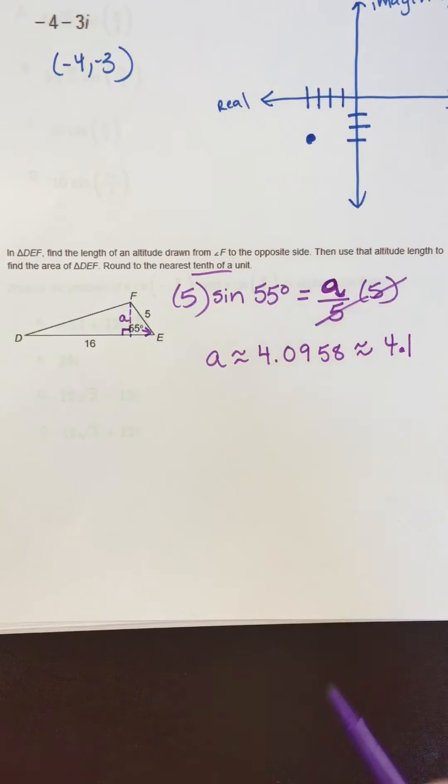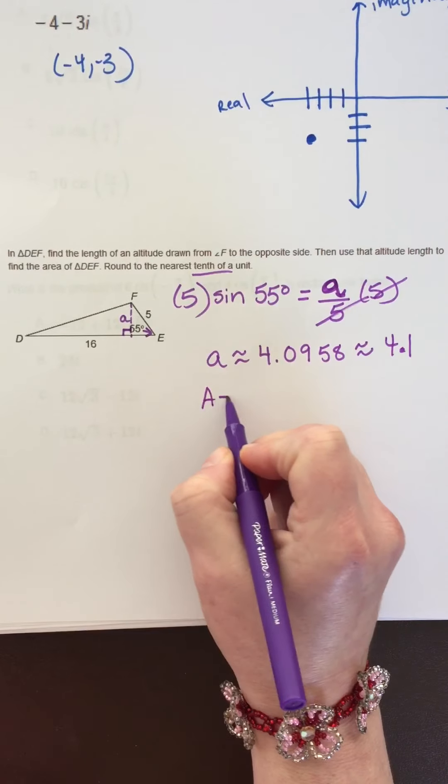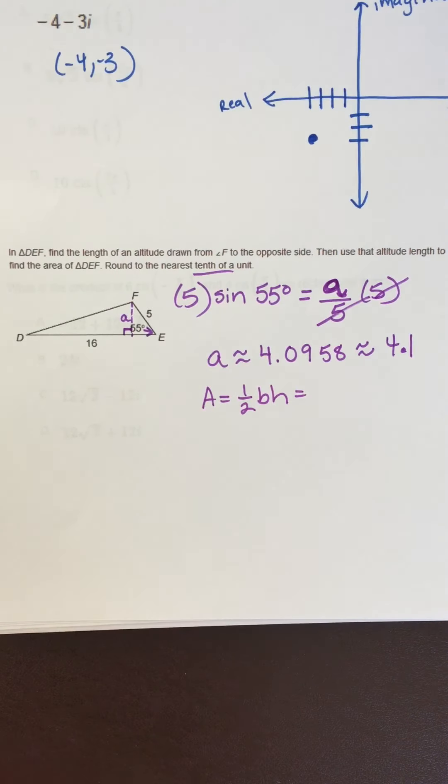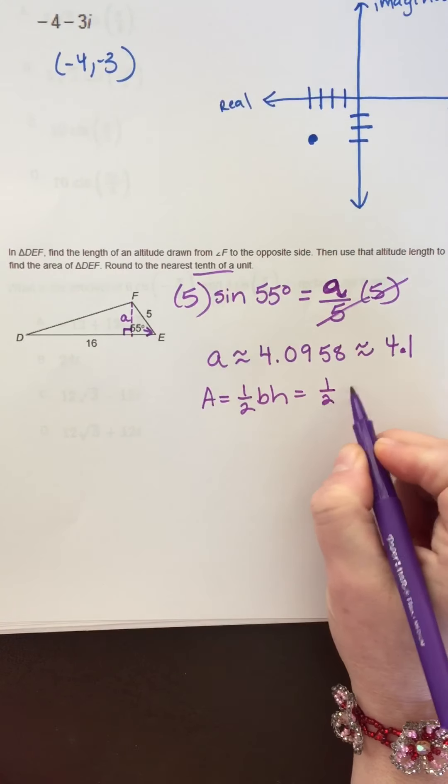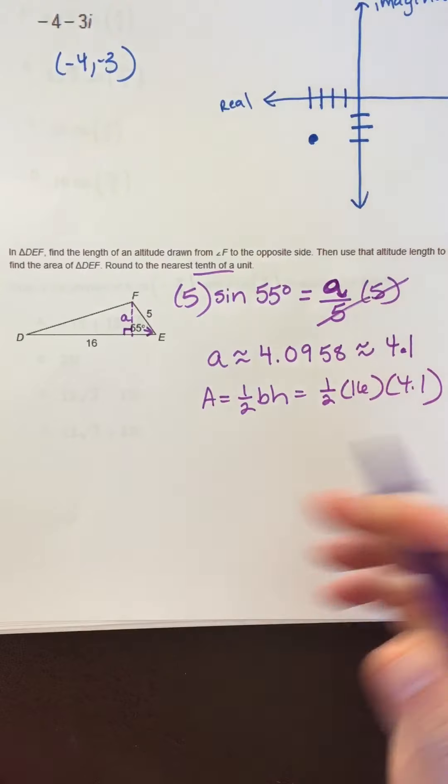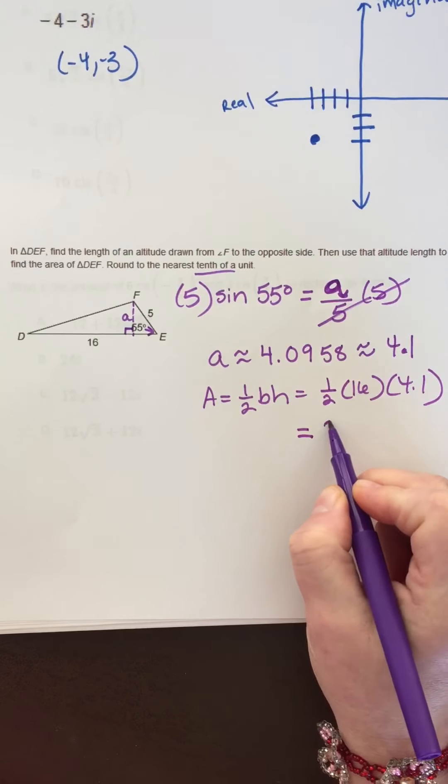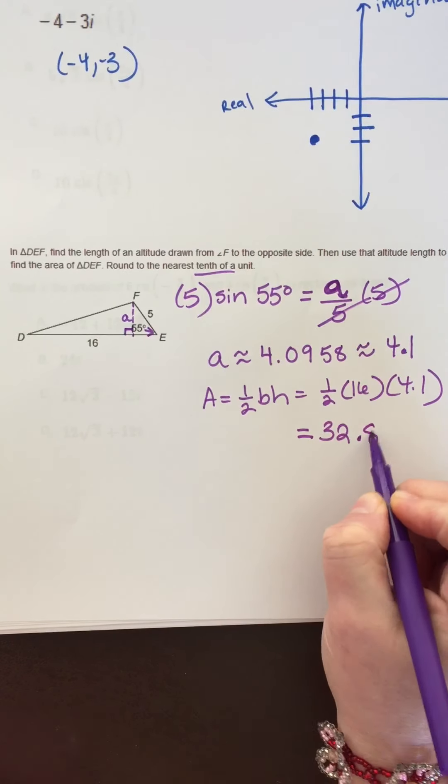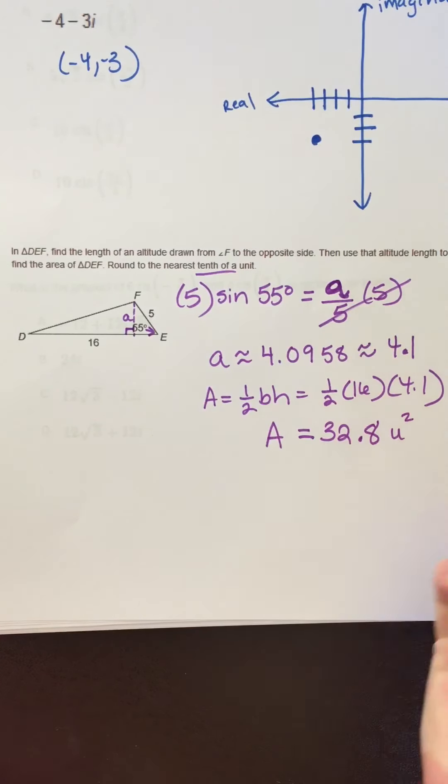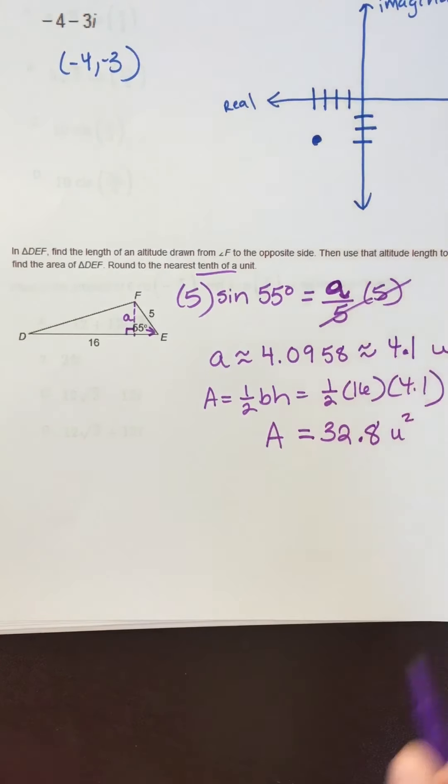Then it wants you to find the area. The area of the triangle equals one-half base times height. That would be one-half times 16 times 4.1. Put that in the calculator and you get 32.8. So the area would be 32.8 units squared, and the altitude would be 4.1 units.